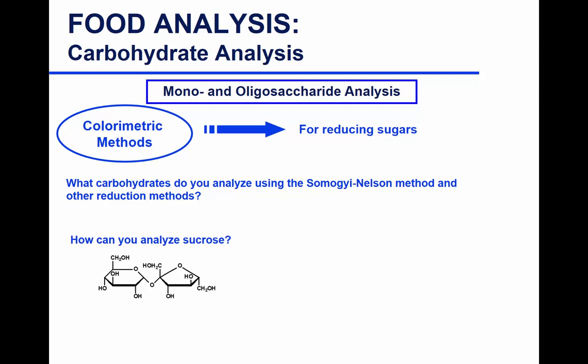What we're measuring here is reducing sugar. But how can we analyze sucrose? Sucrose is not a reducing sugar. So you need to break the glycosidic bond first using acid and heat — then you get glucose and fructose, which are reducing sugars. Then you can measure the reducing power.